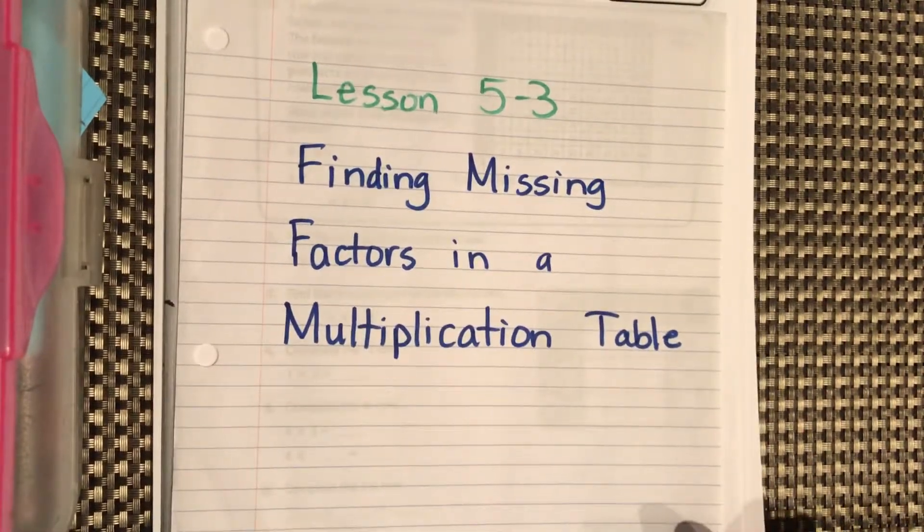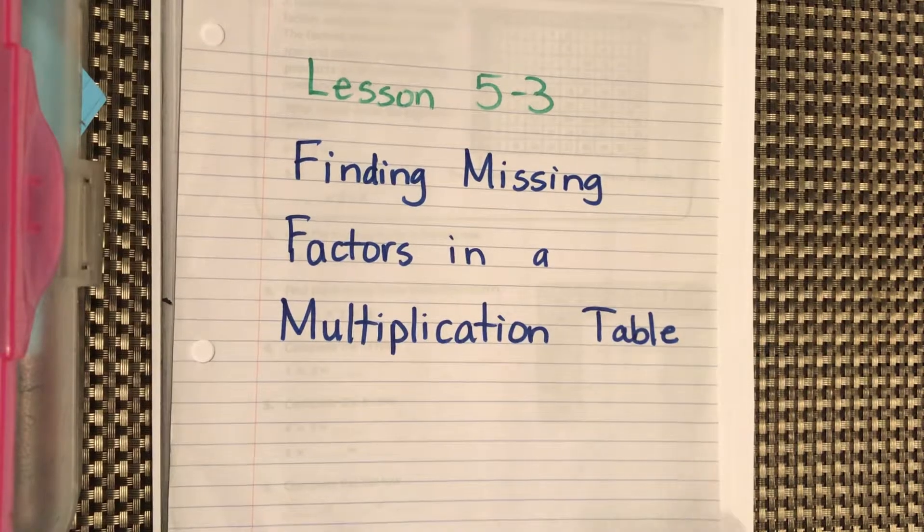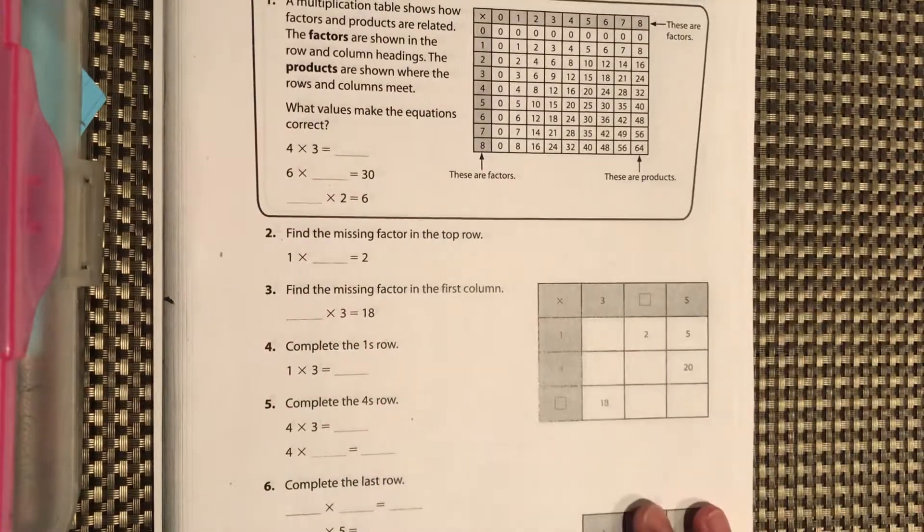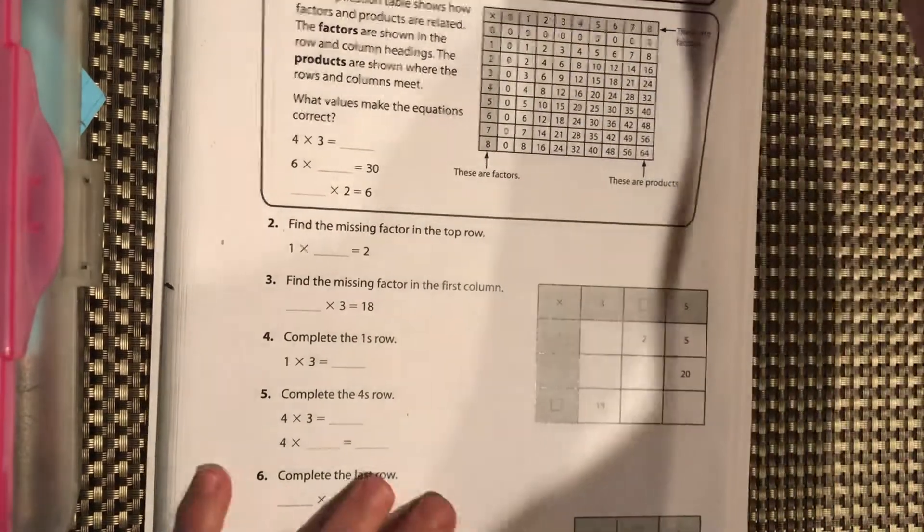Lesson 5-3: Finding Missing Factors in a Multiplication Table. So you have your reteach worksheet here.